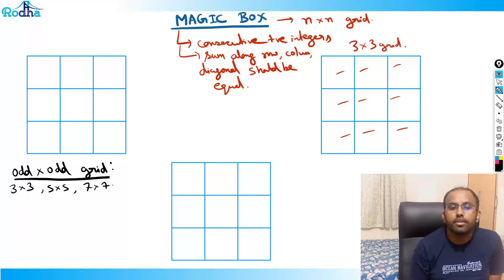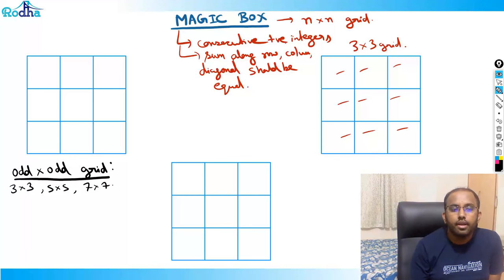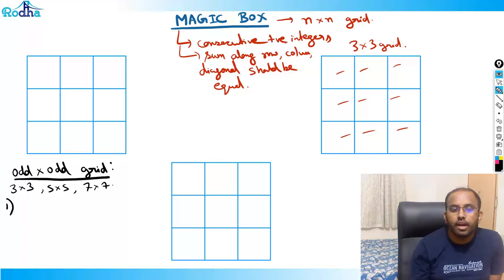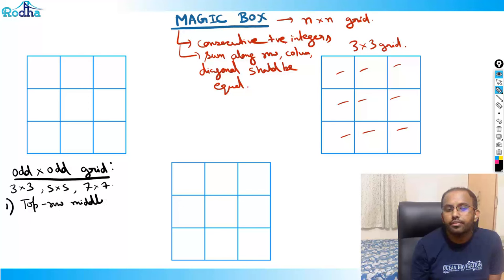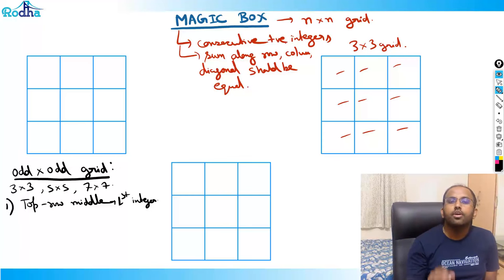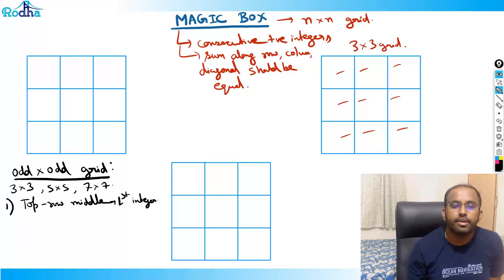So what are the rules to fill a magic box? There are a few rules. Rule number one: the first integer always starts from the top row middle cell. The top row middle will be your first integer from those consecutive integers.